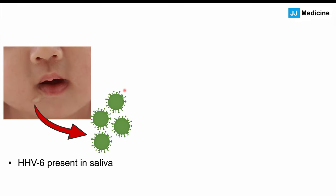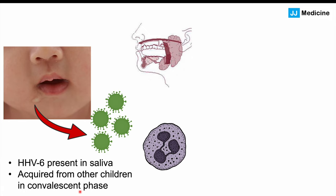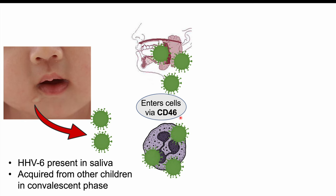Young infants can be infected by HHV6 because the virus is present in saliva, spread mostly from other children who are infected. Even during the convalescent phase, children continue secreting this virus in their saliva. When a young infant is exposed, the virus infects their salivary glands and white blood cells, entering cells via the cellular receptor CD46. It multiplies in leukocytes and salivary glands, and more specifically targets CD4+ T cells.